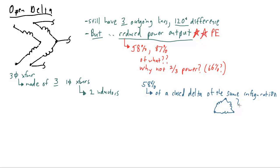So the open delta is 58% of its closed delta matching counterpart. The 87% signifies 87% of the power output of the two single phase transformers when considered in sort of their ideal state in isolation from one another. So it's almost like if you were to remove those two transformers and just add their total power output potential together you would get 87% of that power output from an open delta.